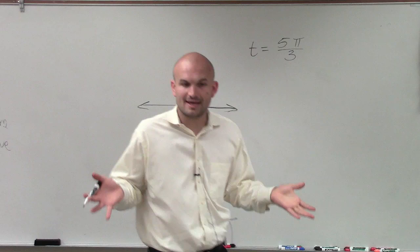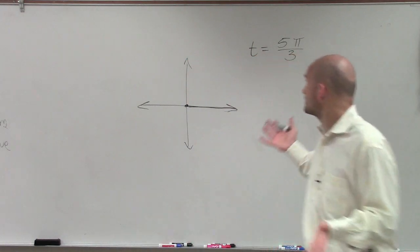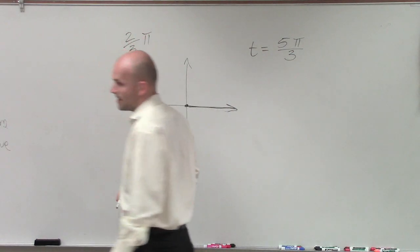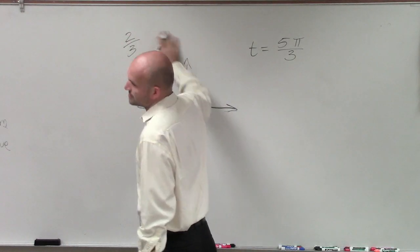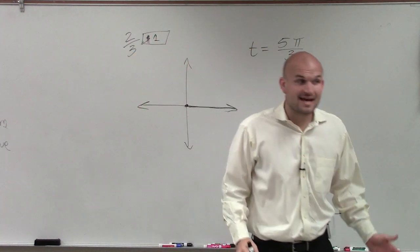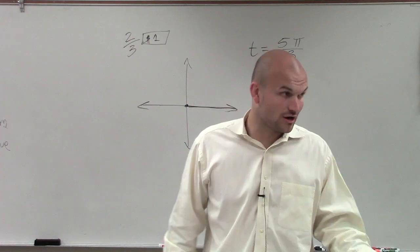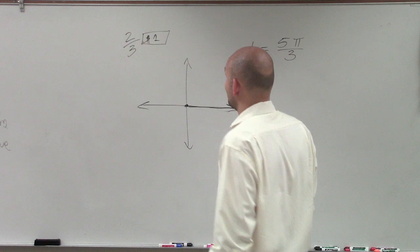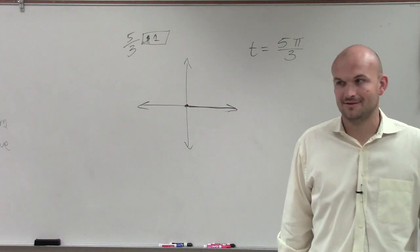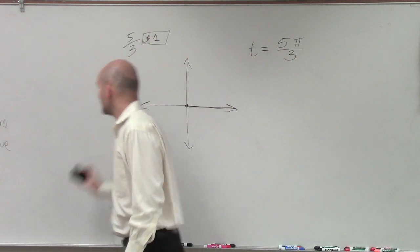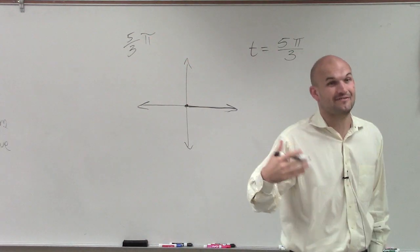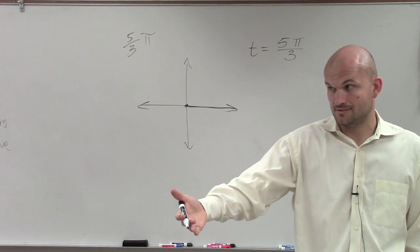But we need to be able to determine where is this 5 pi over 3. So let's talk about pi. Let's talk about a dollar bill. If I say I have 2 thirds of a dollar, do I have more or less than a dollar? Less. If I say I have 5 thirds of a dollar, do I have more than a dollar or less than a dollar? More. So now let's go back to pi. So if I have 5 thirds of pi, that means I have an angle that's larger than pi. Correct?